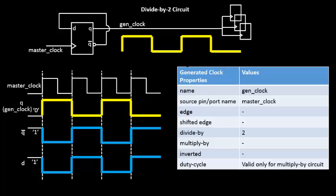This was a basic divide-by-2 circuit example. In the next video, we'll look into more complex circuits and waveforms to derive generated clock properties and fill up the table for those cases.